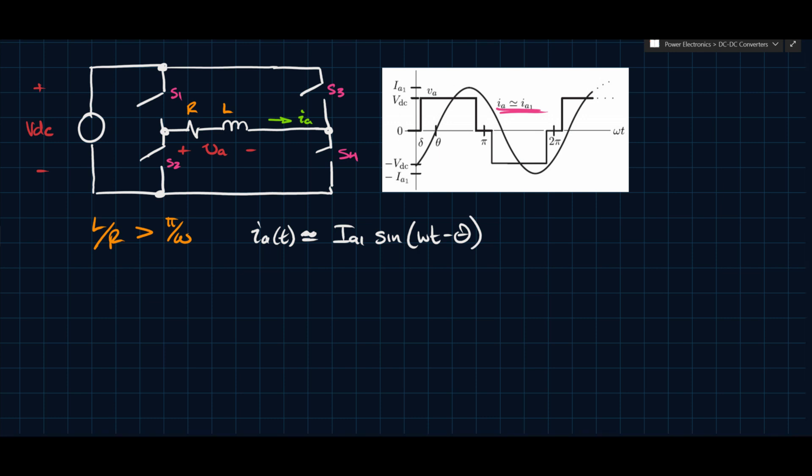This is clearly indicating that you're approximating IA by its fundamental component. So we might call this IA1, but we're going to say that the entire current is IA, so maybe that's not so accurate.